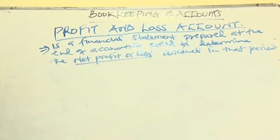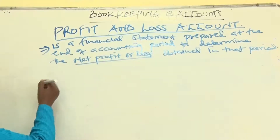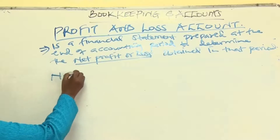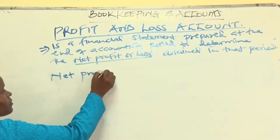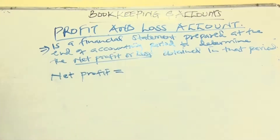You can save a loss or you can get a profit. From the previous financial statement — that is the trading account — we determine the gross profit.